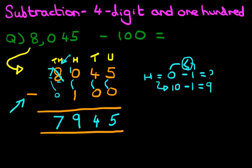Eight thousand and forty-five minus one hundred is seven thousand, nine hundred and forty-five. That is correct. Let's give it a nice big tick. So that is how we do subtraction of four-digit numbers and the number one hundred using the vertical format.